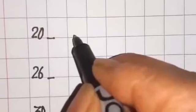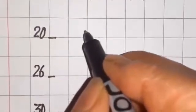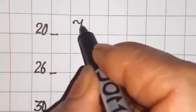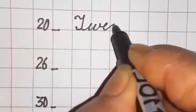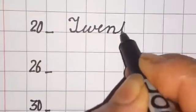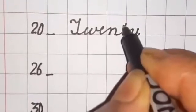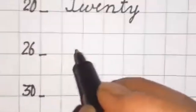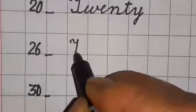Now twenty. What is the spelling of twenty? T-W-E-N-T-Y, twenty. Next one is twenty-six.